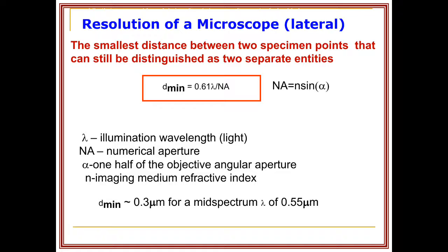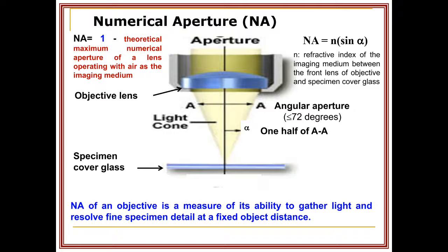Alpha (α) is one half of the objective angular aperture, and N is the imaging medium refractive index. The theoretical maximum numerical aperture value is one when operating with air as the imaging medium. N is the refractive index of the imaging medium between the front lens of the objective and the specimen and cover glass.